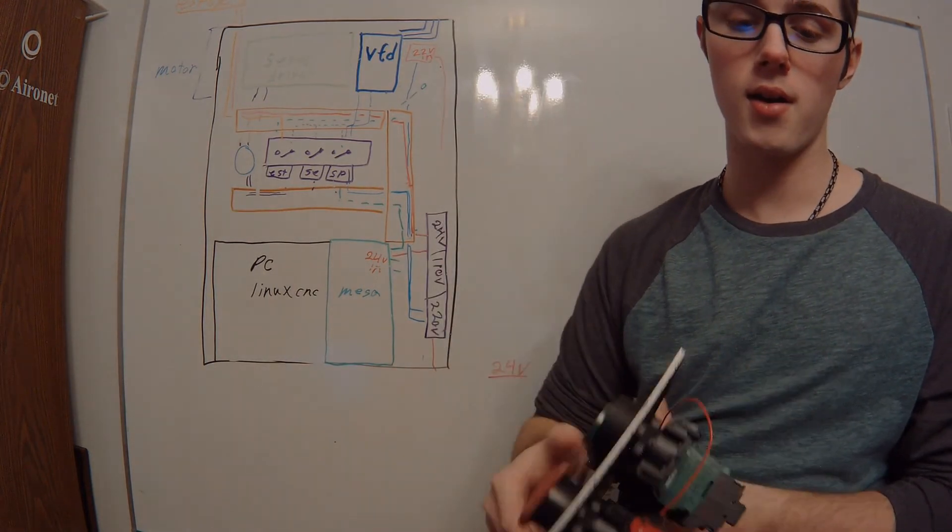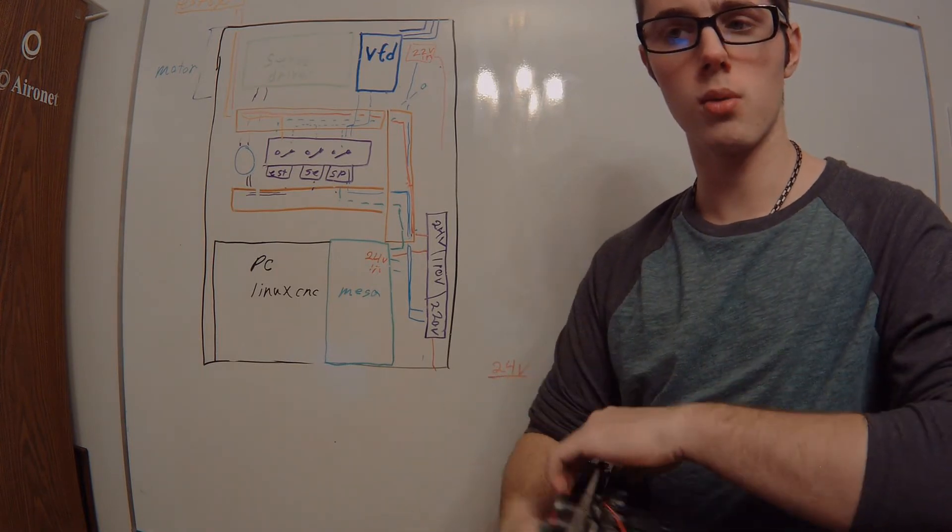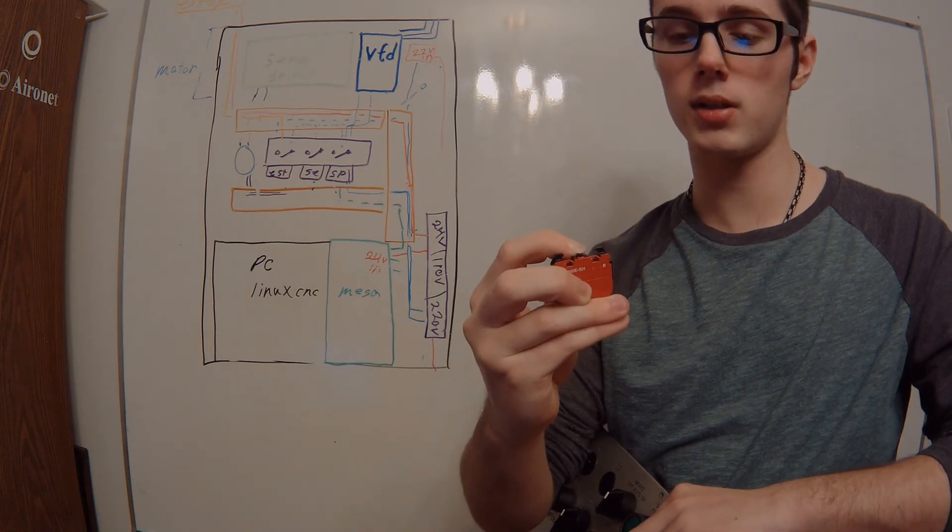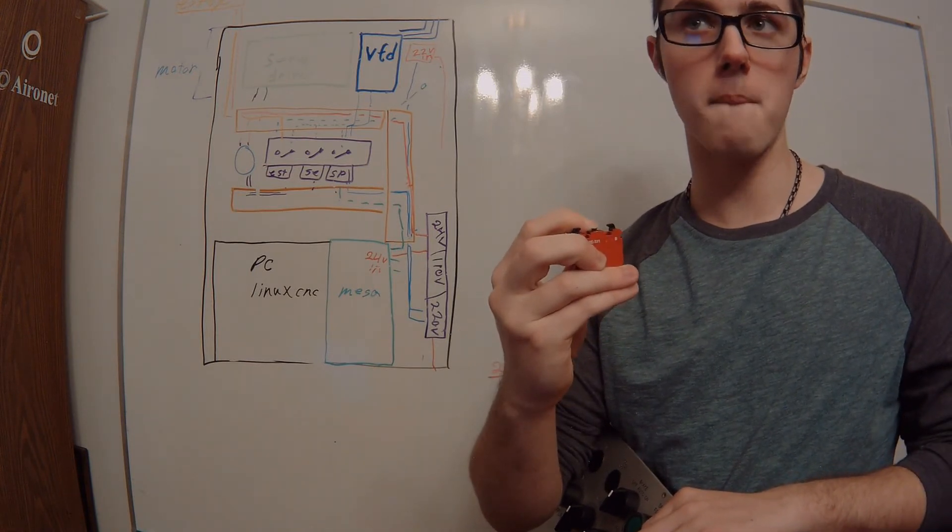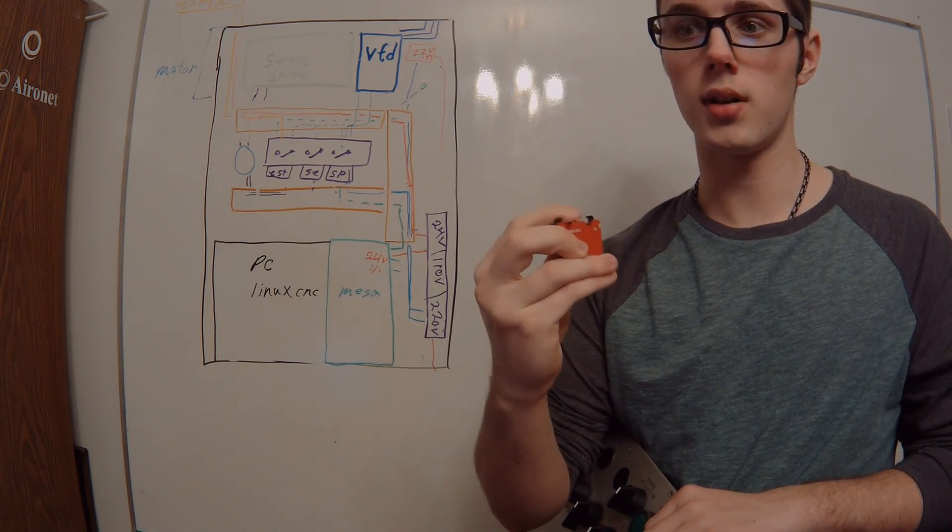So when it presses that, it kills the signal. These are kind of backwards from your normal switches. So there's power coming through these as long as this little button's not pushed. Once this button gets pushed, it breaks the circuit and tells the machine it's gone.